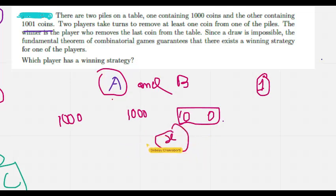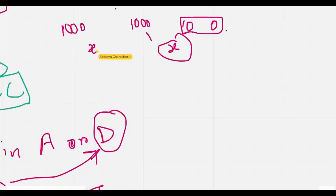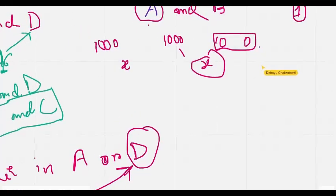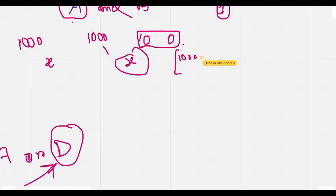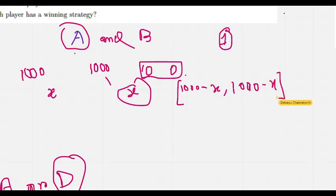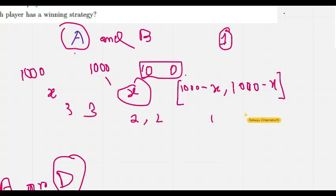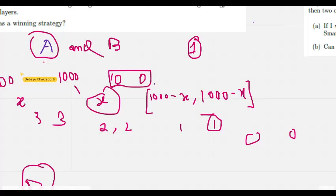Since 1000 coins exist in both piles, they are symmetric. If B pulls X coins from one pile, A simply pulls X coins from the other pile. This again creates a symmetric situation. B must again pull coins, and if A plays this mirror strategy, at some moment we'll reach 3-3, then 2-2, then 1-1, and eventually A will take the last coin, leaving 0-0, and B loses. This is A's winning strategy.